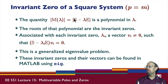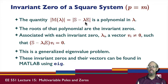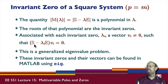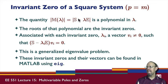The quantity in general — the determinant of S minus lambda*E — is a polynomial in lambda. The roots of that polynomial are the invariant zeros. If this determinant equals zero, there is a non-trivial null space. This is called a generalized eigenvalue problem. Notice E is like an identity matrix, so lambda*I minus S is like a standard eigenvalue problem. The invariant zeros and their vectors can be found in MATLAB using EIG.